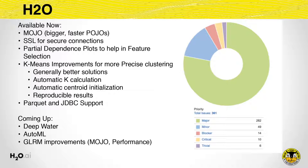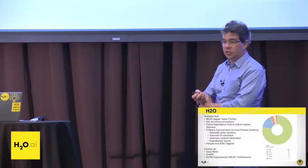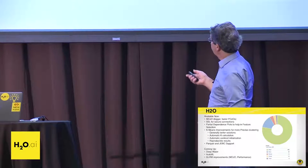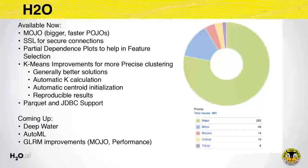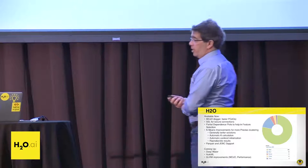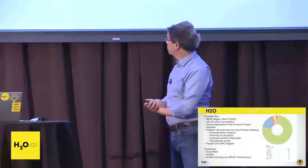SSL — secure socket layer — is more operational. If you want to get to H2O in a secure way, we now support that. It's very important for some of our customers. This is the front end, different from connection to the back end. And in terms of connectors, Parquet and JDBC — we've had these improvements for a little while, but they're worth mentioning for access to more data files.